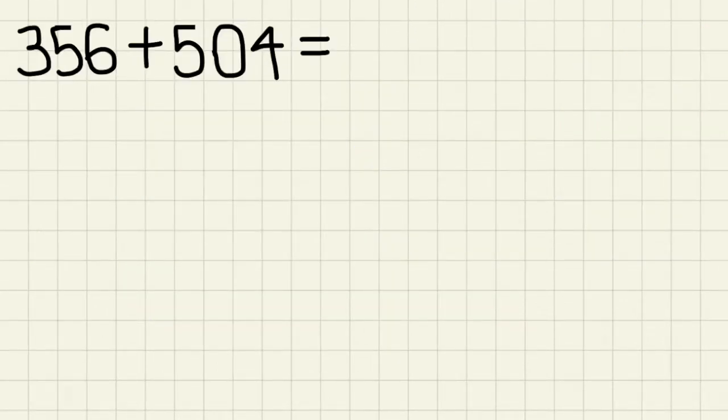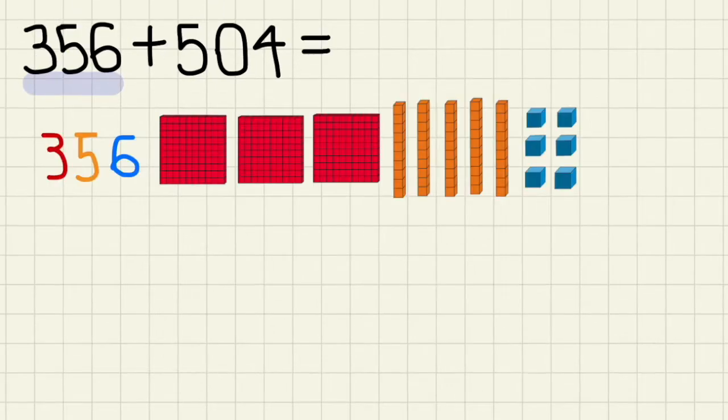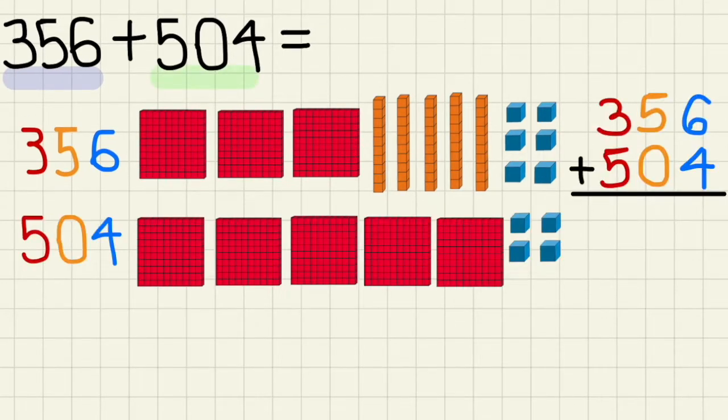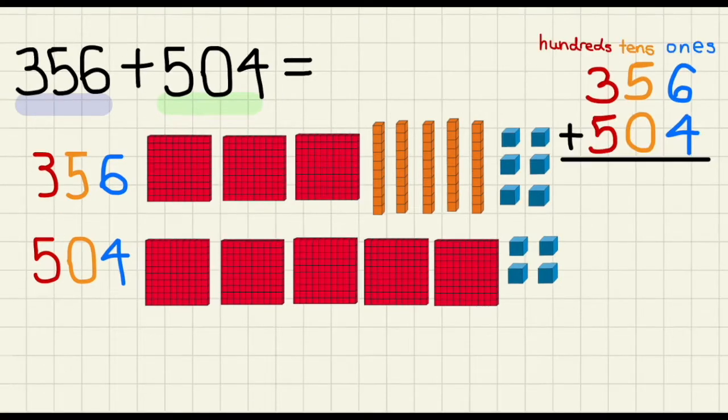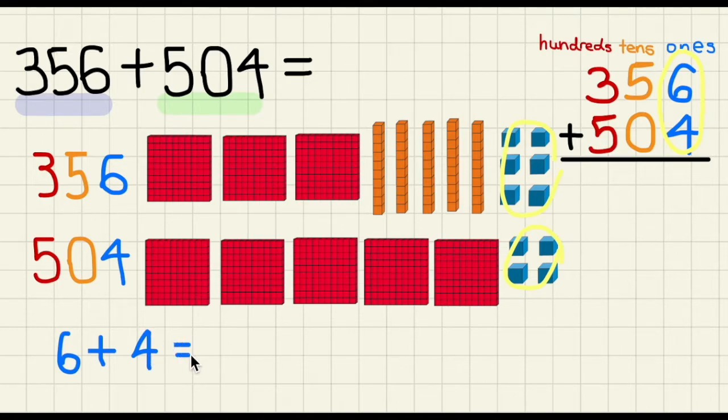Our next question is 356 plus 504. Let's see what 356 consists of. It consists of 3 hundreds, 5 tens, and 6 ones. 504 consists of 5 hundreds and 4 ones. Again, we have to start from the ones place when we add these. So 6 plus 4 is on the ones place. And 6 plus 4 equals to 10.